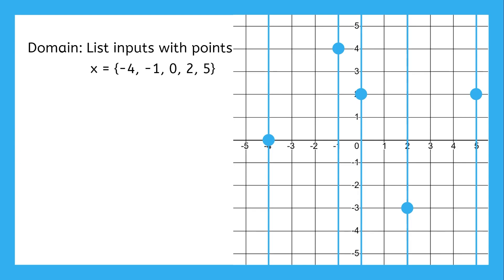See how there's a lot of missing numbers from the list? It's because they have no point. Three is not in the domain because without a point, we can't connect it to a particular output.